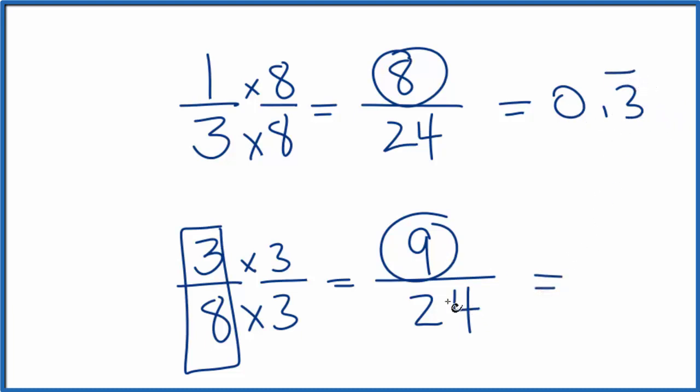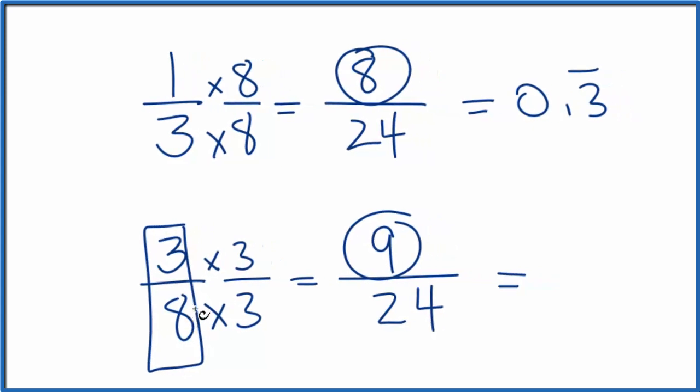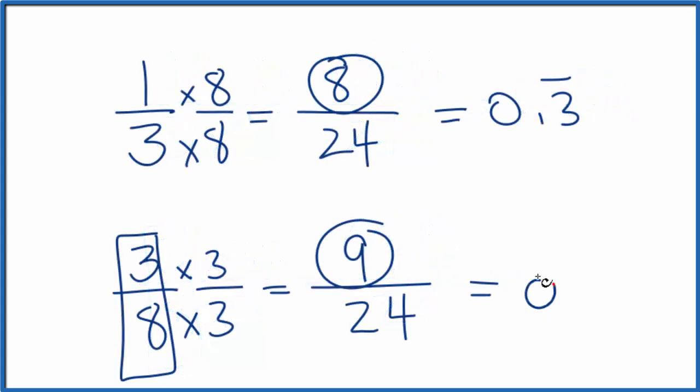9 divided by 24, or 3 divided by 8, it'll give us the same thing. That gives us 0.375. So if you think of this repeating out here like this, this is a larger number. 0.375, that's larger than 0.333.